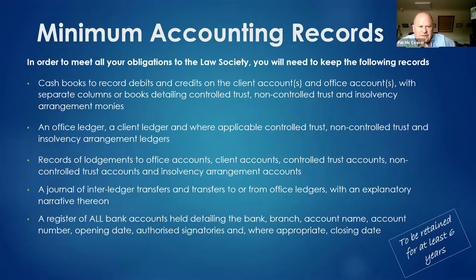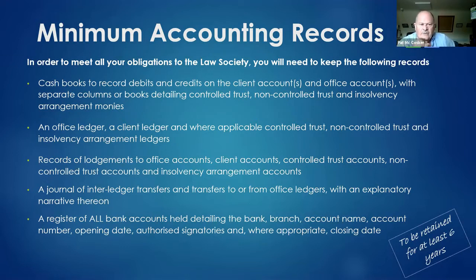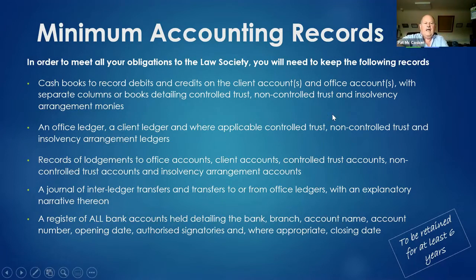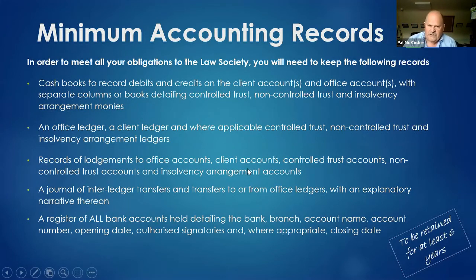Your minimum accounting records to meet Law Society obligations include: cash books recording debits and credits (automatically provided by a computerised system, or kept manually if not), records of all lodgements to the office account, a journal of inter-ledger transfers, and a register of all bank accounts held — detailing the bank, branch, account name, account number, opening date, and authorised signatories.